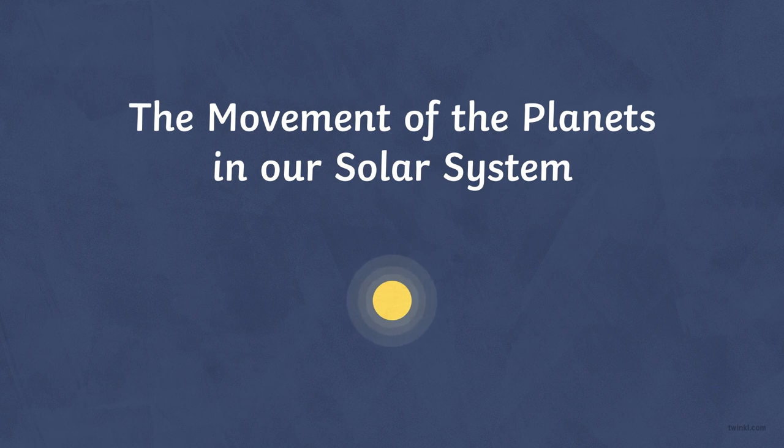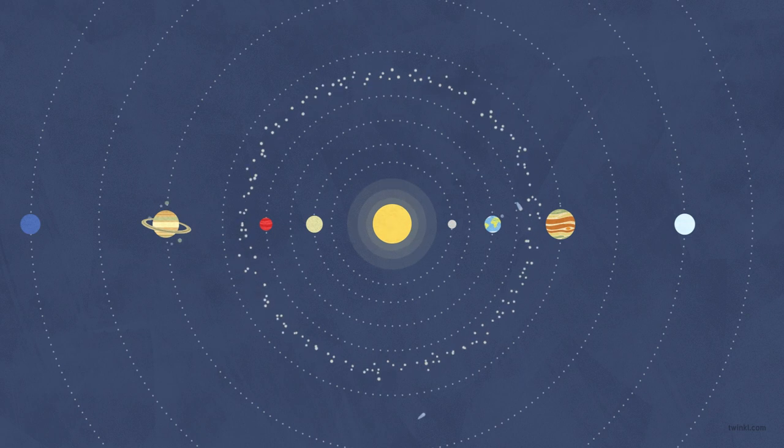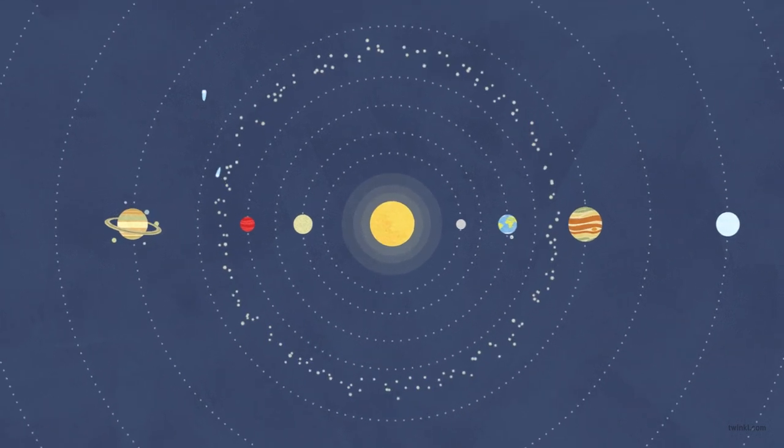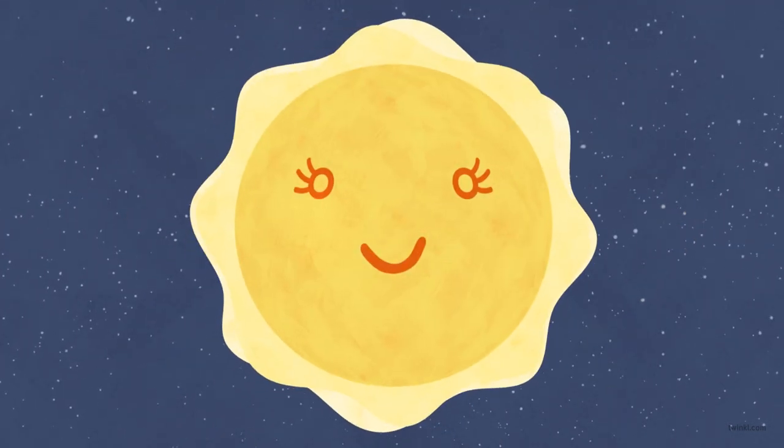The movement of the planets in our solar system. A solar system is a star and all the objects that orbit around it. These might include planets, asteroids, moons, and comets. The star at the center of our solar system is...